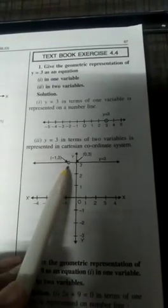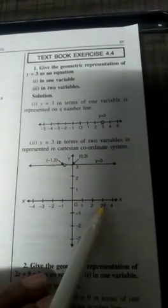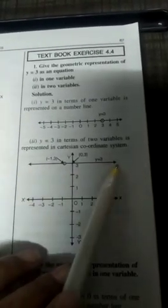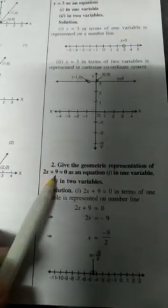So y is 3. Here is the point. If x is negative, y equals 3. If x equals minus 2, y equals 3. If x equals 3, y equals 3. For any value of x, y equals 3. It's one straight line parallel to the x-axis.